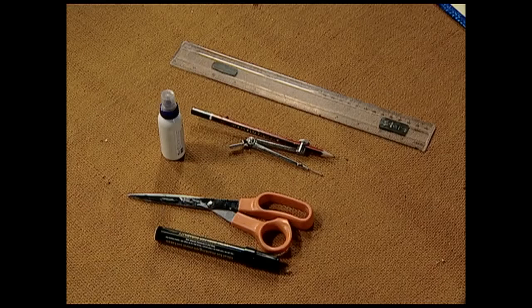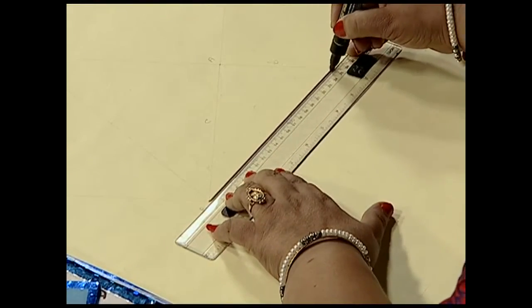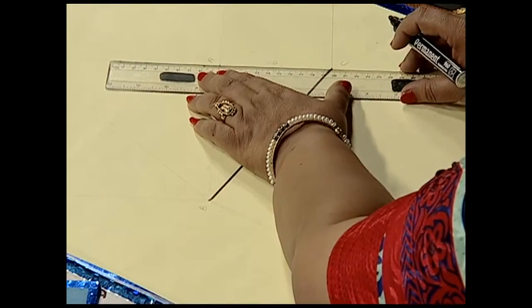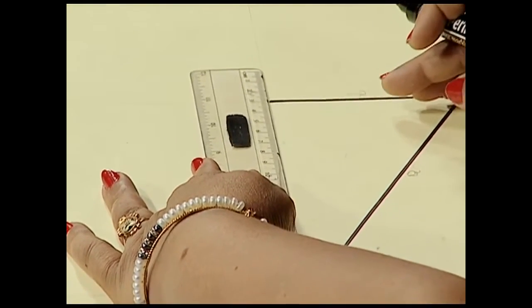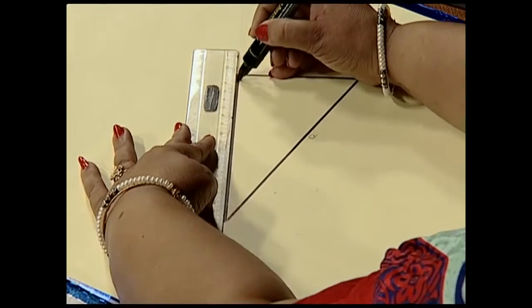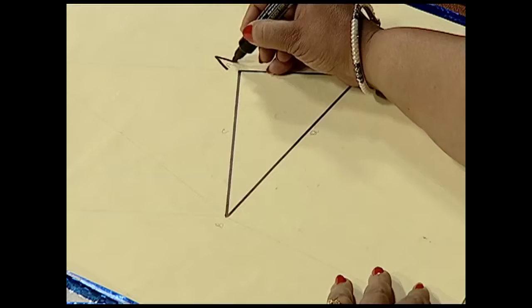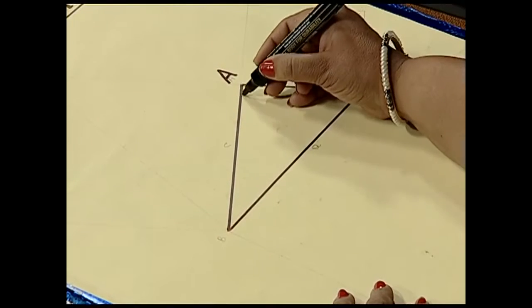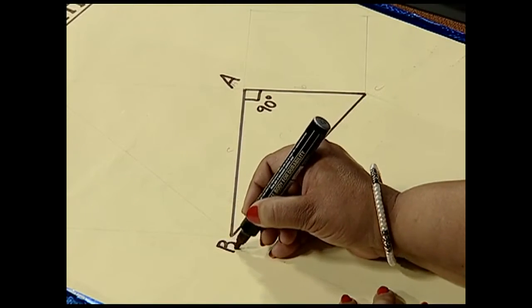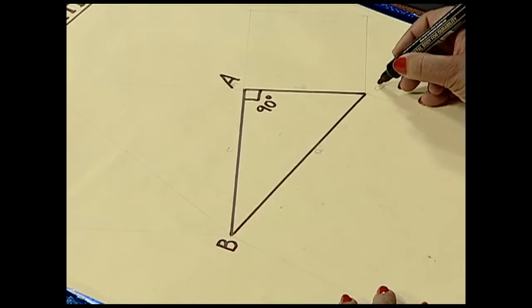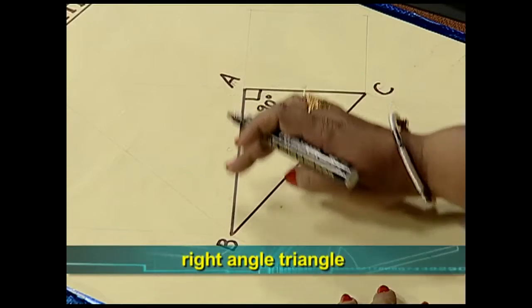We also need a compass, pencil, and eraser. Now to begin with, let us construct a right triangle. We consider a right triangle with sides AB, BC, and AC. This is angle A, which is a right angle. This is point B and this is C. So we have a right triangle ABC.